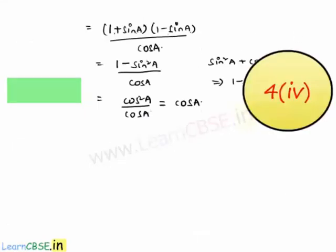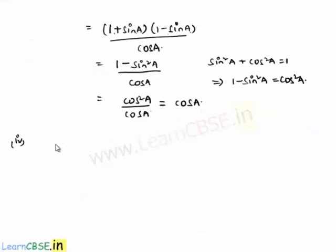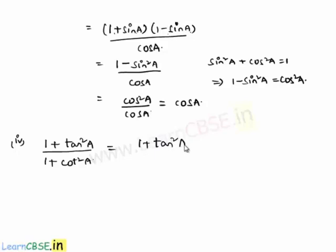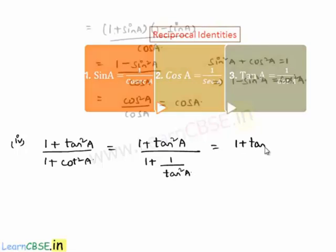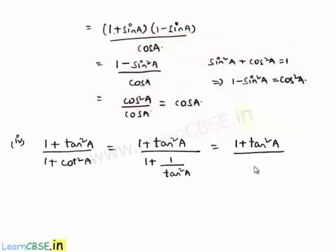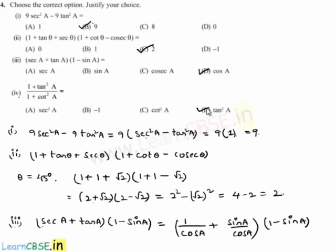For the fourth bit: (1 + tan²a)/(1 + cot²a). Rewriting 1 + cot²a as (tan²a + 1)/tan²a, then the expression becomes (1 + tan²a) divided by (1 + tan²a)/tan²a. The (1 + tan²a) terms cancel, leaving tan²a. So option D is correct.